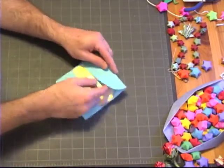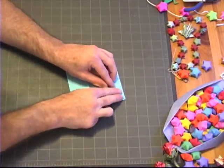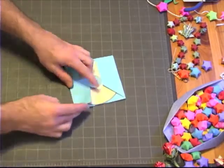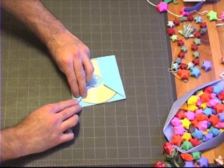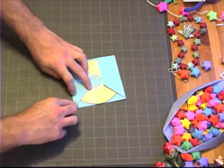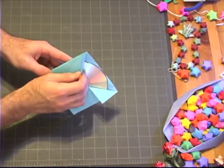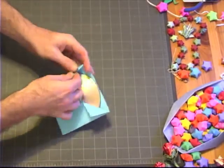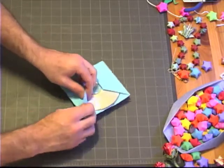What you can do is take this edge and fold it at a 45 degree crease. Same thing with the other side. Then go ahead and take these creases and use them as a guide to fold them back inside.